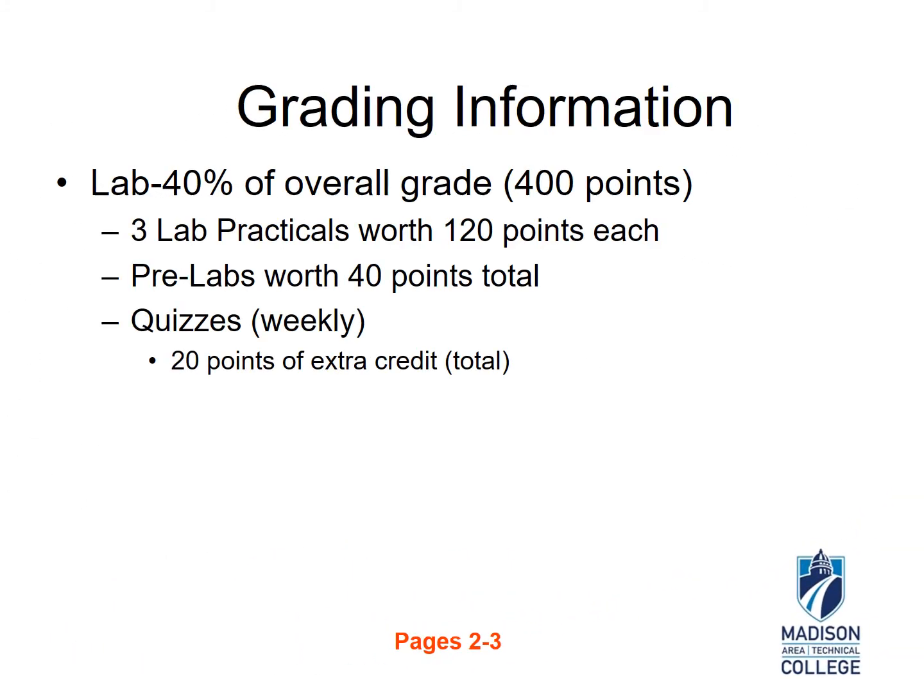The other 40% of your overall grade comes from lab. You will have three lab practicals or exams, each worth 120 points. Your pre-labs — and there will be 13 of them — will collectively be worth 40 points, adding up to 400 points. You will also have weekly quizzes, but the quizzes are extra credit. The quizzes collectively can give you 20 points, so you have the ability to accumulate 420 out of 400 points, with 20 points being extra credit.